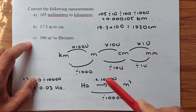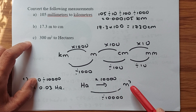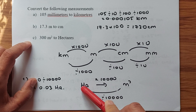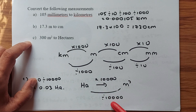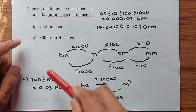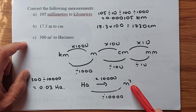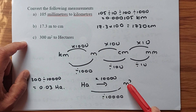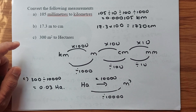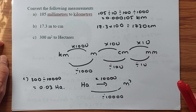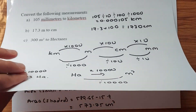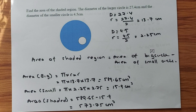The next question is about area: convert 300 meters squared to hectares. One hectare is equivalent to 10,000 meters squared. To convert hectares to meters squared you multiply by 10,000; to convert meters squared to hectares you divide by 10,000. So 300 meters squared divided by 10,000 gives 0.03 hectares.